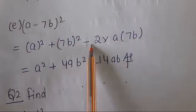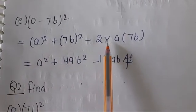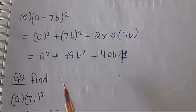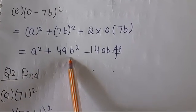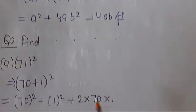Next, (a - 7b)². Dhekhye, a² + (7b)² - 2 × a × 7b. So a², 7 squared is 49, 49b² minus 2, 7 is 14. Dhekhye, ab.